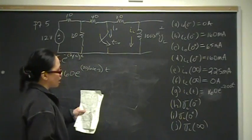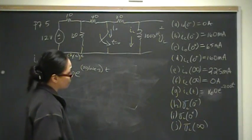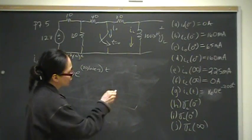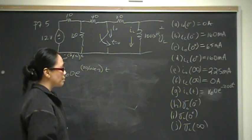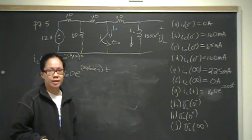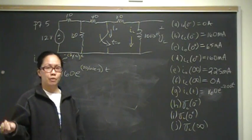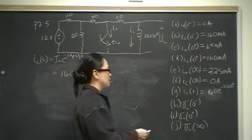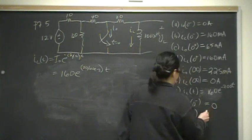The voltage across the inductor before time zero is zero, because the inductor acts as a short circuit in DC steady state, and short circuits have no voltage drop.